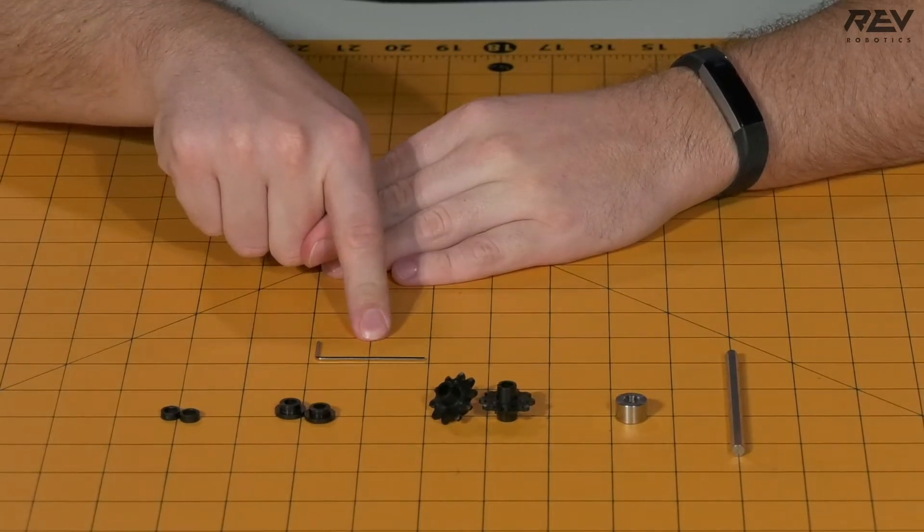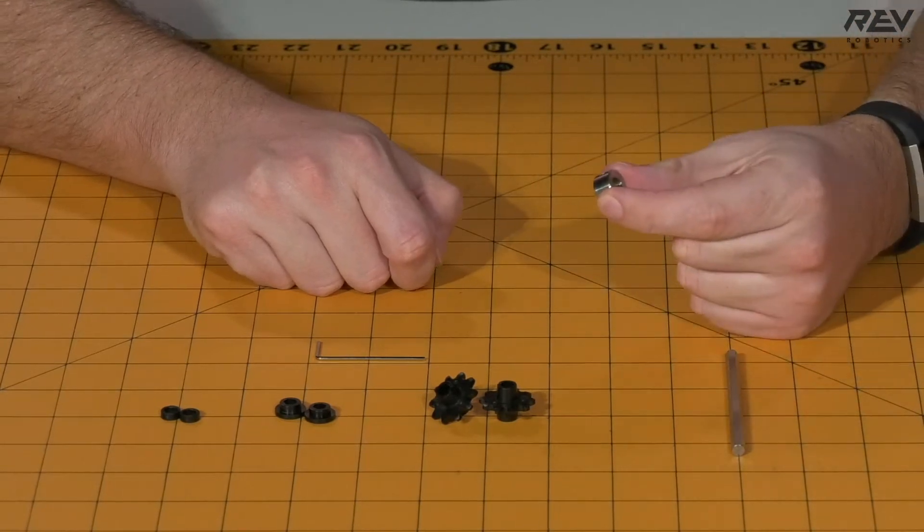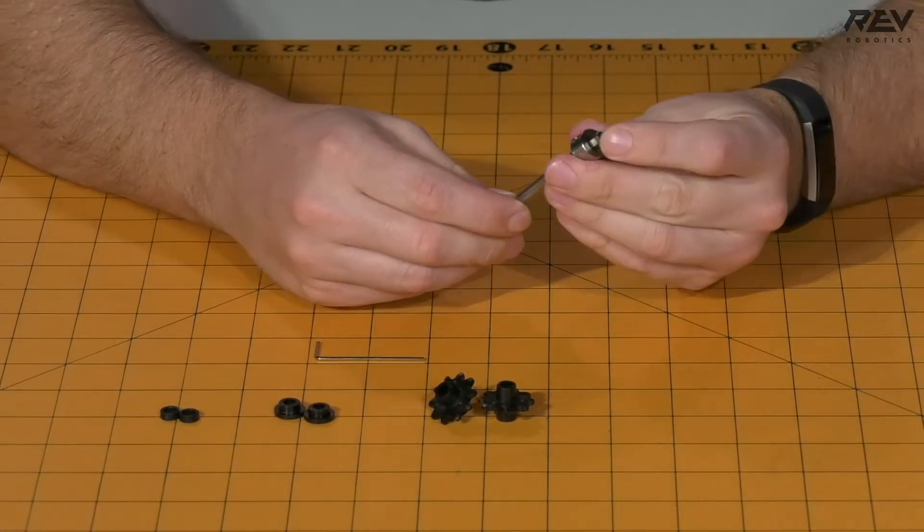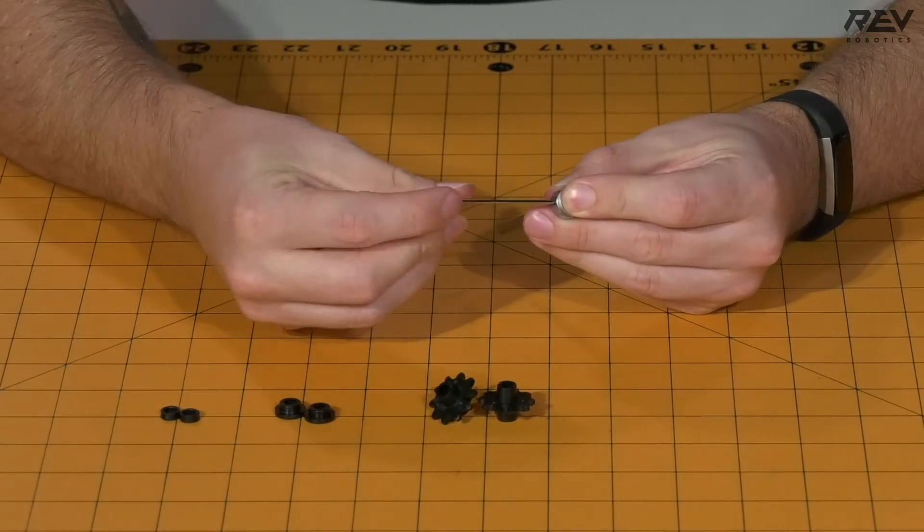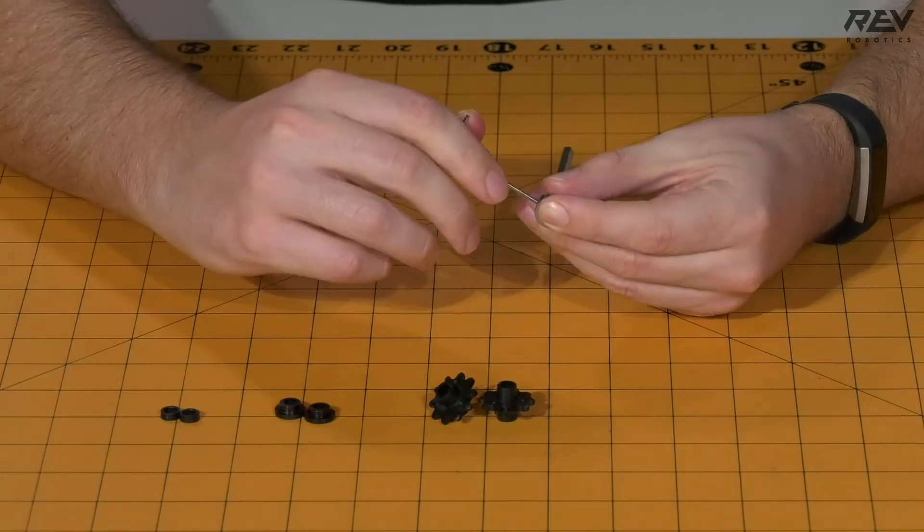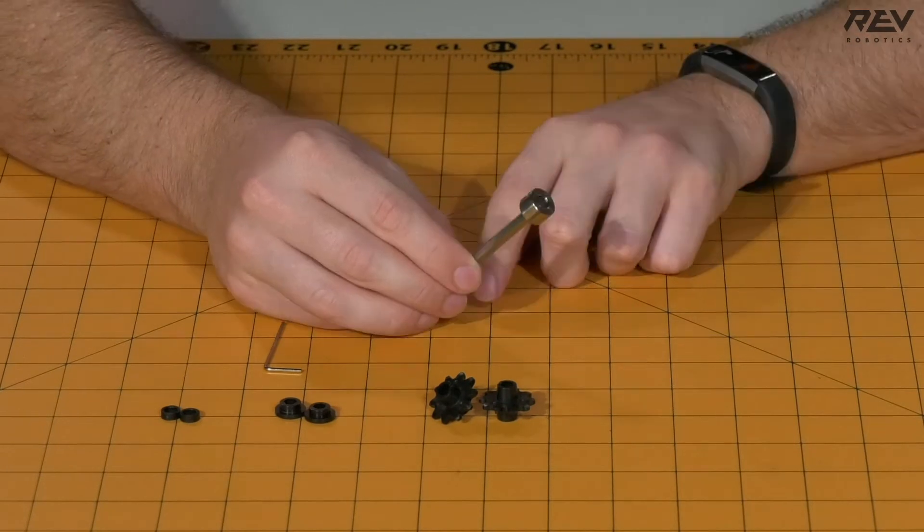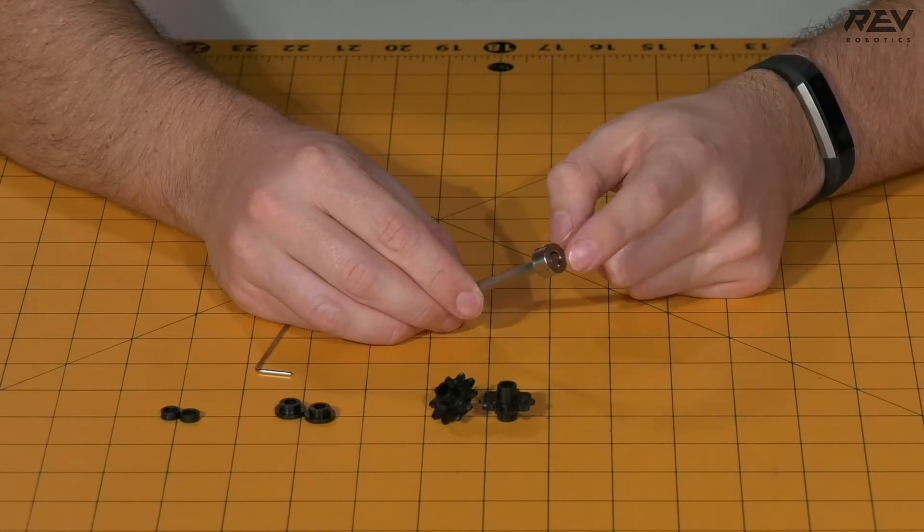To begin, take your shaft collar and 5mm hex shaft and slide the shaft collar onto the hex shaft, making it flush with the end. Using your Allen wrench, tighten the shaft collar down. Note that the shaft collar is flush with the end of your hex shaft.